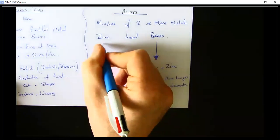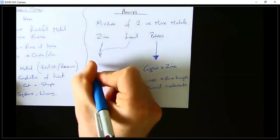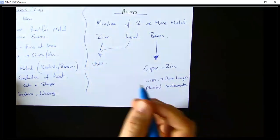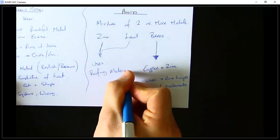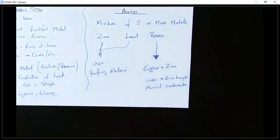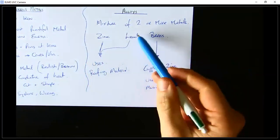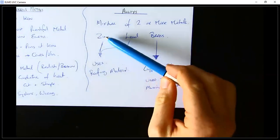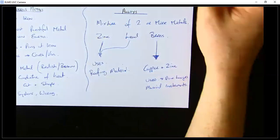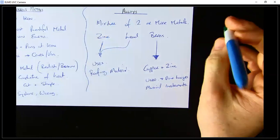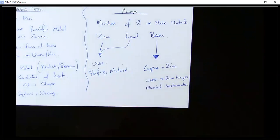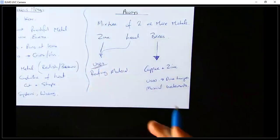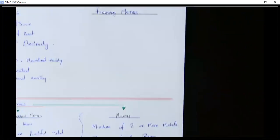Zinc and lead are also alloys. You'll see them used as roofing materials. You might be familiar with the phrase 'sinking like a ball of lead' — lead is used for fishing as a weight at the end of a fishing line, so it's a really dense heavy material. Roofing materials is probably the easiest use to remember for both lead and zinc — you see lots of lead and zinc on roofing materials.